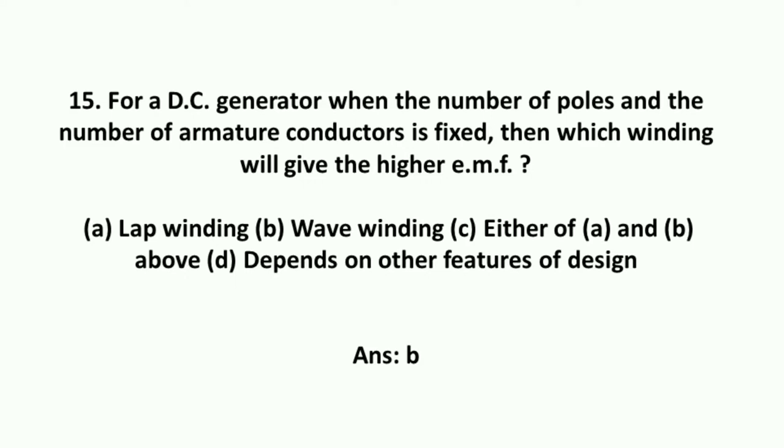For a DC generator, when the number of poles and the number of armature conductors is fixed, then which winding will give the higher EMF? The answer is wave winding.